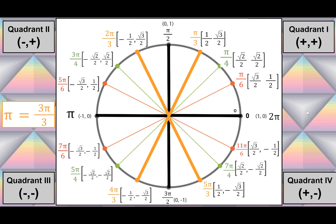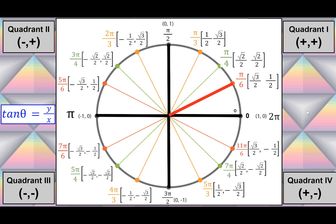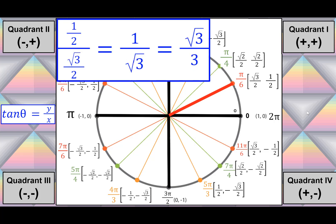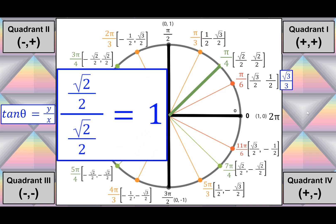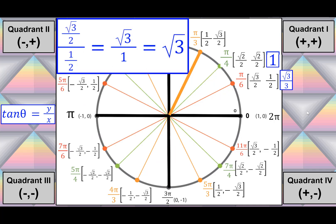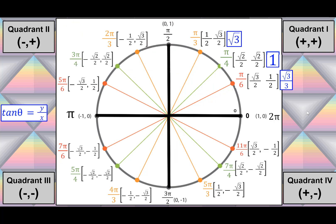Now we've filled in all the x-y points, but it's also really helpful to know the tangent values. Tangent of θ is not x or y — it's y divided by x. At π/6, 1/2 divided by √3/2 equals 1/√3, which rationalizes to √3/3. At π/4, √2/2 divided by √2/2 equals 1, so tan(π/4) = 1. At π/3, √3/2 divided by 1/2 equals √3. We can fill in the rest of the tangent values by using these three and looking at the signs of x and y in each quadrant.